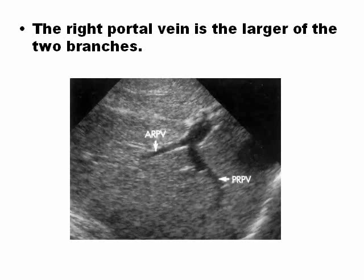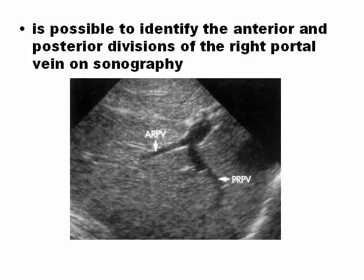The right portal vein is the largest of the two branches, because the right lobe is the bigger lobe. It is possible to identify the anterior and posterior division of the right portal vein on sonography, along with the right hepatic vein.